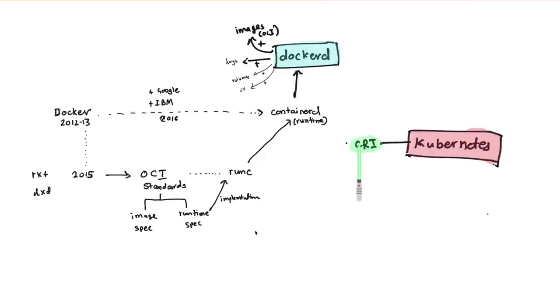Any runtime including containerd, CRI-O, or even Rocket at that time—any runtime which understood CRI could work with Kubernetes. This simplified things significantly.